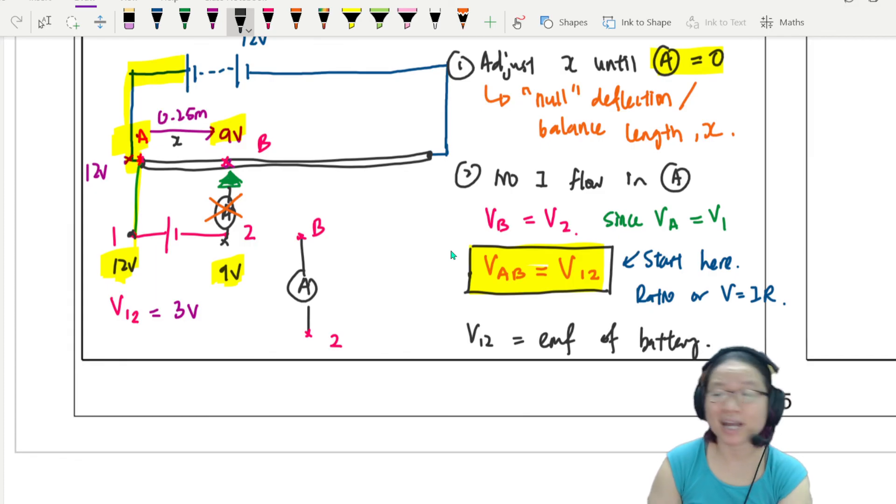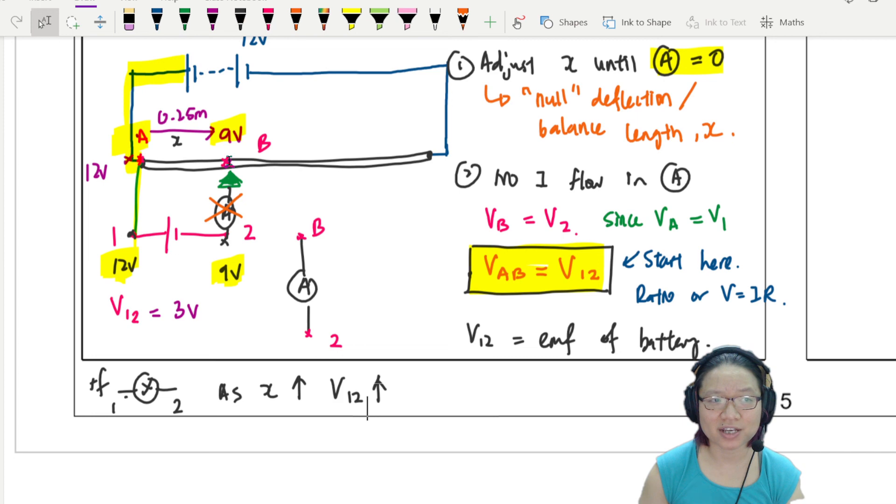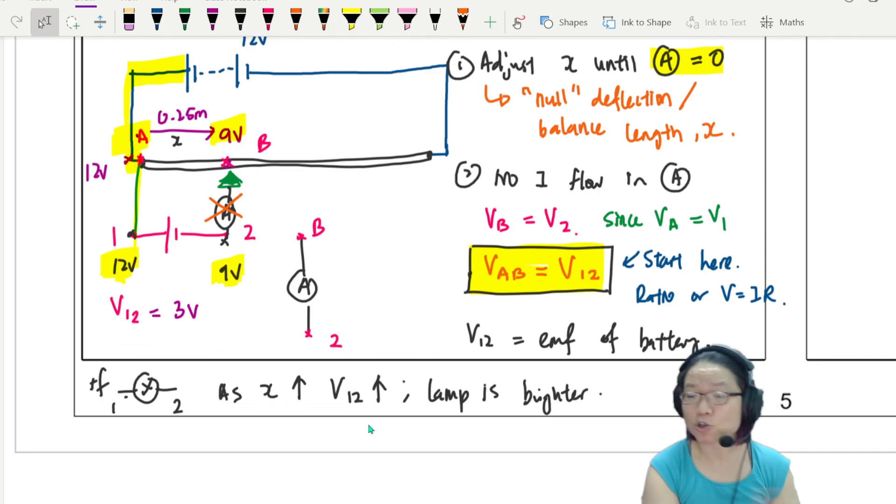These are all different terms they use for ammeter reading zero. Balance length x. So, but what that means is there is no current flowing in the ammeter. So if there's no current flowing in the ammeter, let's say I mark out these two points here as being point A and point B. I can say the potential at B must be the same as V2. Because if you think about your ammeter, and then on top here, you have point B. Below here, you have two. So VB is equal to V2. Then current cannot flow.